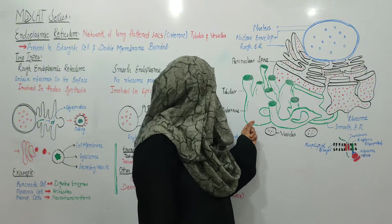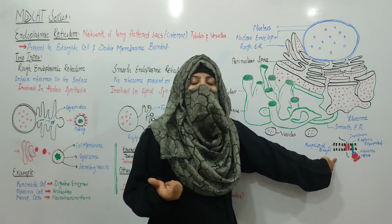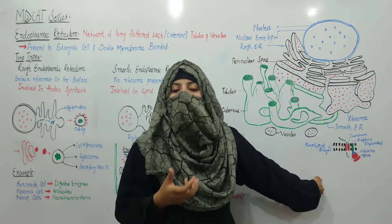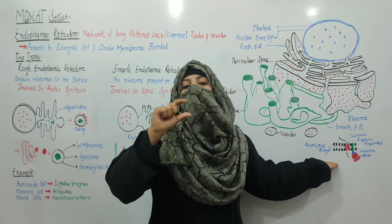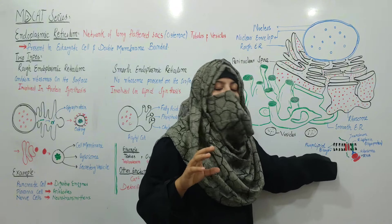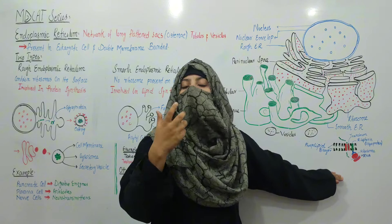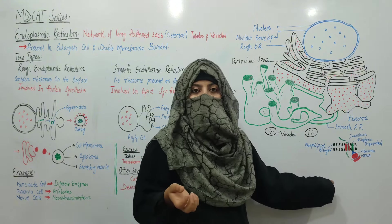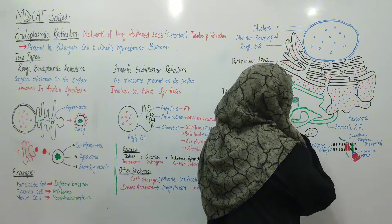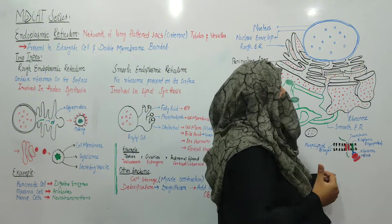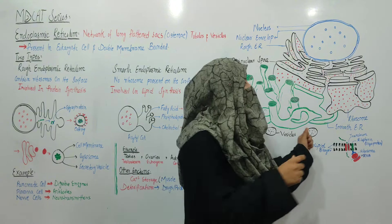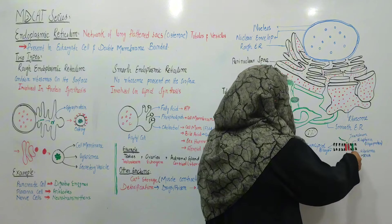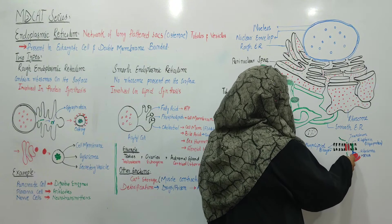Now let's talk about the membrane. The endoplasmic reticulum membrane is a lipid bilayer. As I told you about plasma membrane, the membrane is made by phospholipids — the core layer is made by phospholipids and there are proteins present in it. In the endoplasmic reticulum, there is a protein called ribophorin which attaches with ribosomes. The larger ribosomal subunit attaches with ribophorin.